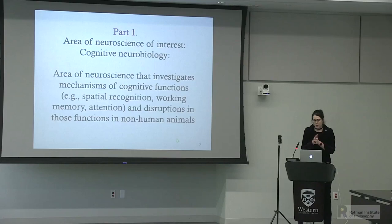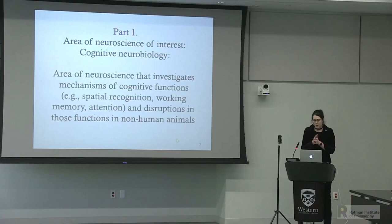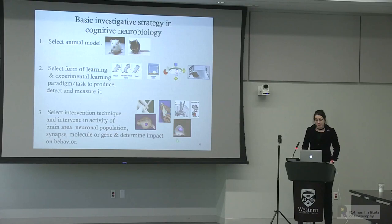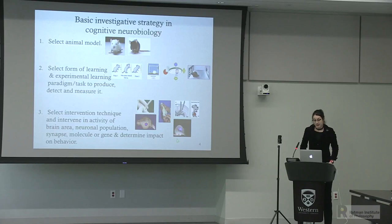The area of neuroscience I'm interested in is cognitive neurobiology, which roughly investigates the mechanisms of cognitive functions—including spatial recognition, working memory, and attention—and disruptions in these functions in non-human animals. The basic investigative strategy is as follows: you select an animal model (the experiments I'll be discussing are rodent experiments), select a form of learning and an experimental paradigm to produce, detect, and measure that form of learning in the laboratory, then select an intervention technique and intervene in the activity of a brain area, neuronal population, synapse, molecule, or gene to determine the impact on behavior.